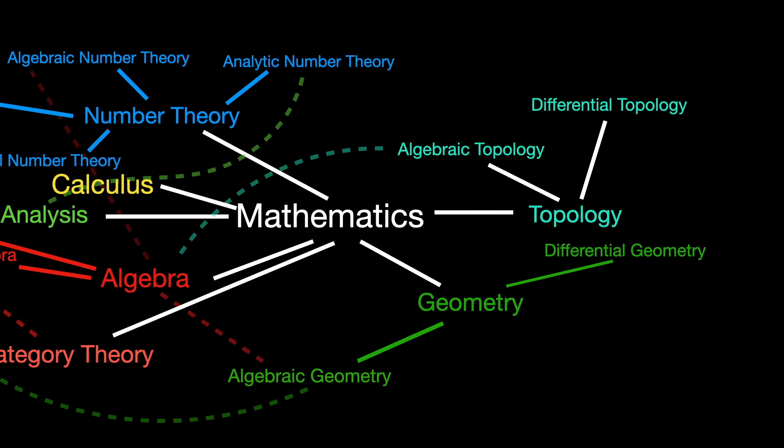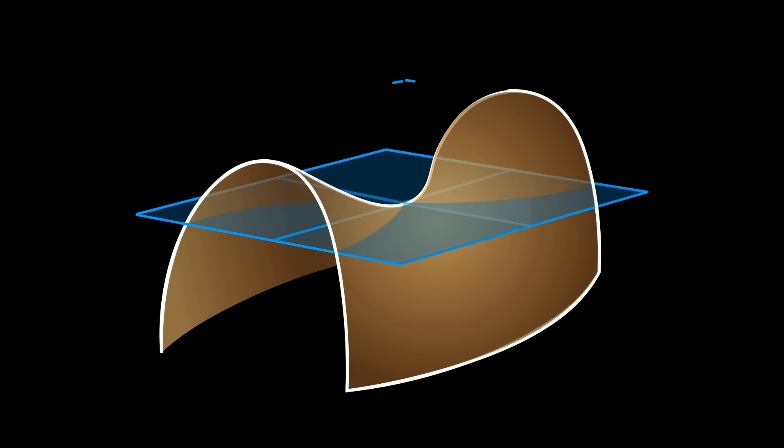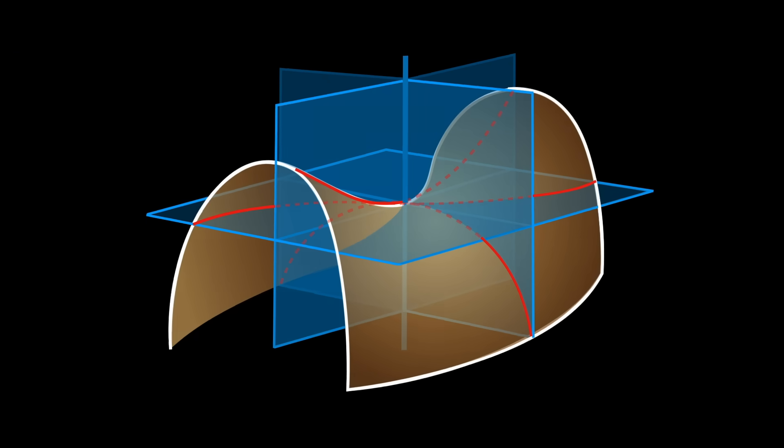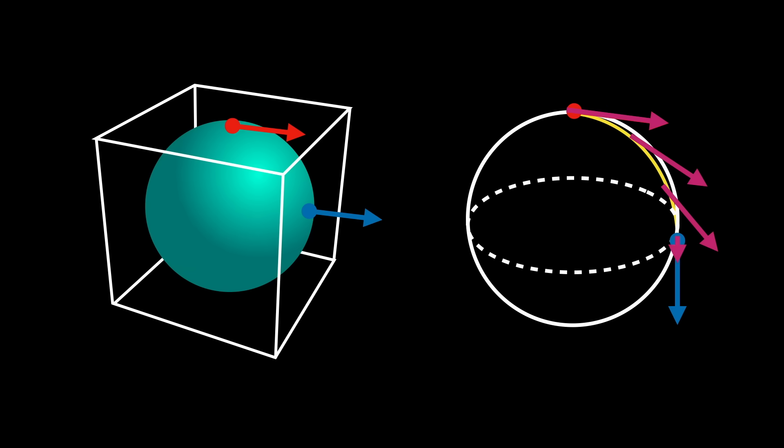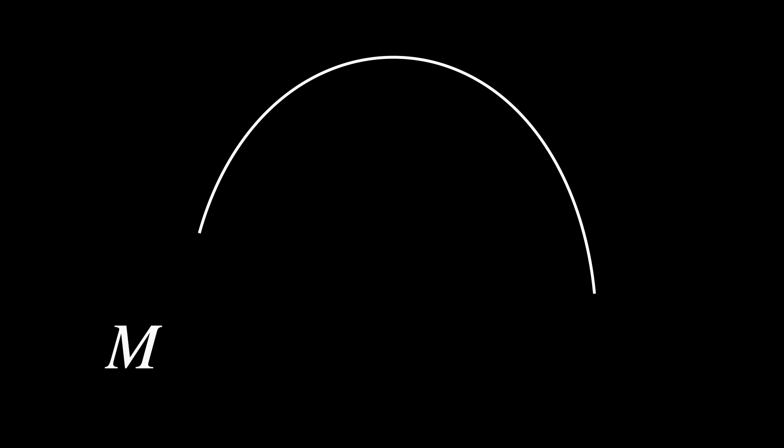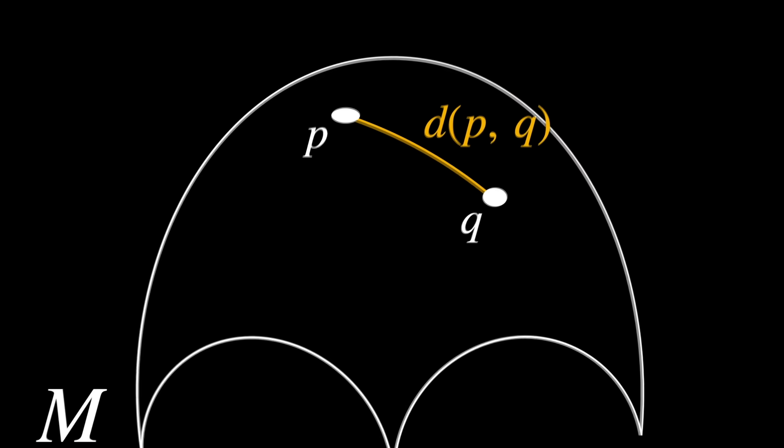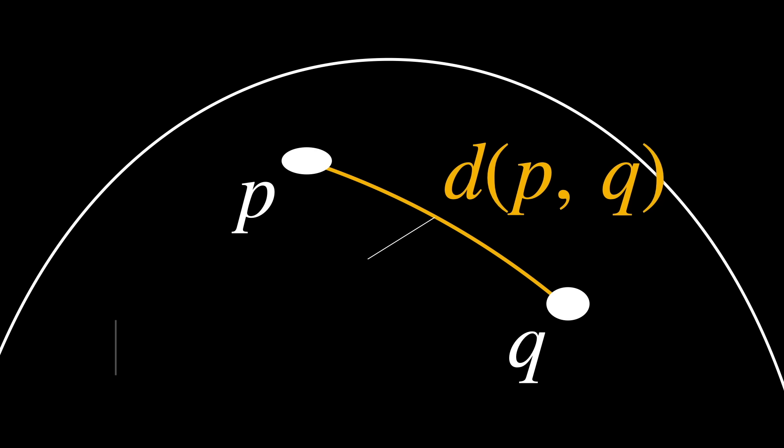Differential Geometry. Differential geometry is the study of smooth shapes and structures. It uses the tools of calculus and linear algebra to explore properties of curves, surfaces, and higher dimensional manifolds. Key topics include curvature, geodesics, and connections, with strong links to topology, analysis, and even theoretical physics.